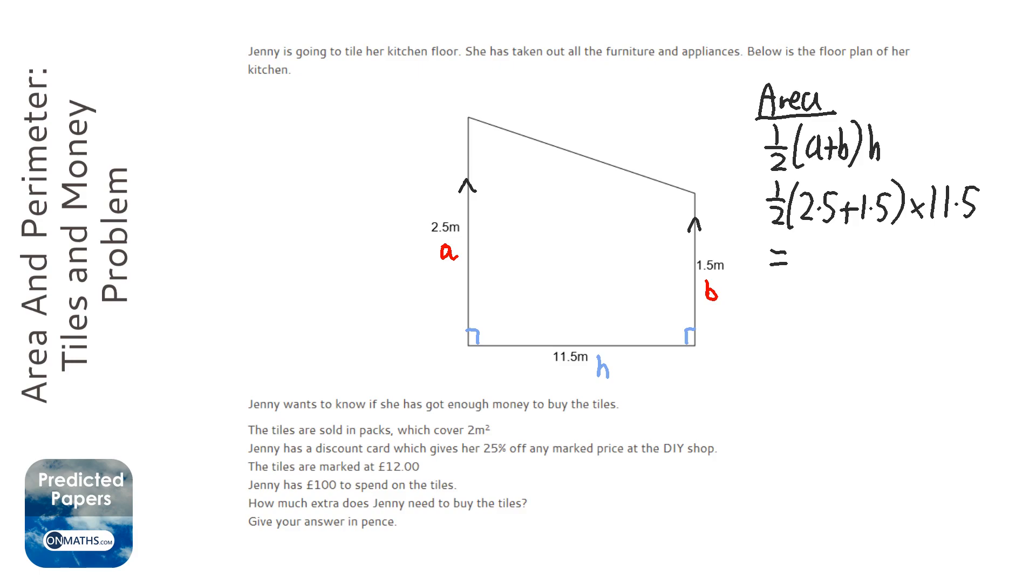So I can get my calculator out and I can do 0.5 times 2.5 plus 1.5, close brackets, times 11.5. And that gives me the answer of 23. So the area of this is 23 meters squared.